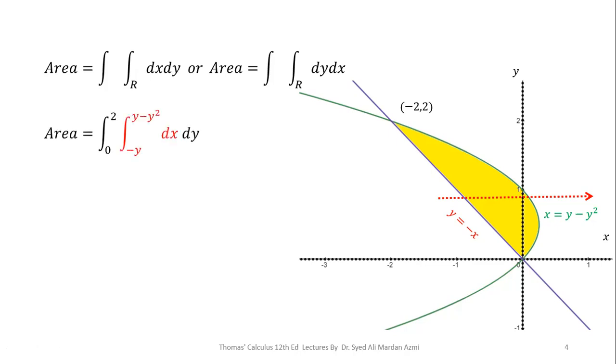So, you can see in order to calculate the limits of x, I have passed a horizontal arrow through my region of integration. This arrow enters to the boundary y = -x and exits the boundary x = y - y². So, the limits of x are -y to y - y² and for outer variable, we always calculate range of that particular axis for this region. For y, our region starts from origin and ends at 2. So, the limits of y are 0 to 2.